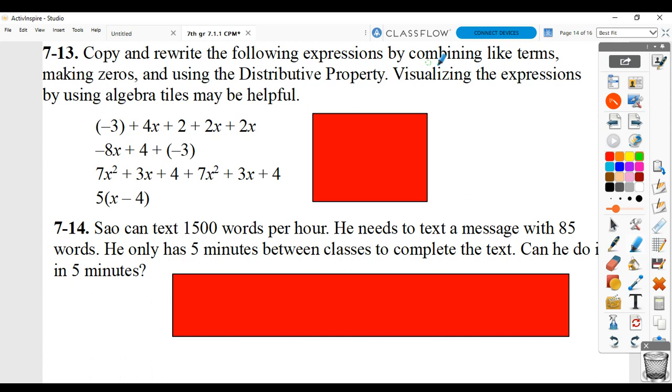For 7.13, you basically want to combine your like terms, make zero pairs, and use the distributive property. For the first one, you can combine your x terms. 4x plus 2x plus 2x would be 8x. You can combine your constant terms. Negative 3 plus 2 would be negative 1. So you end up with 8x minus 1, or 8x plus negative 1.